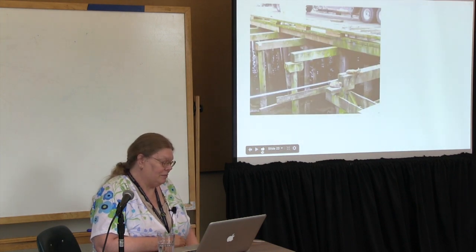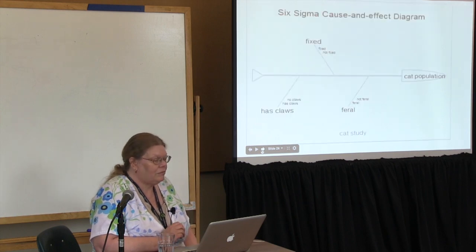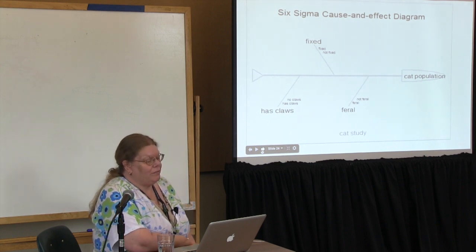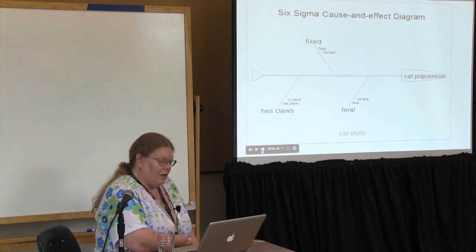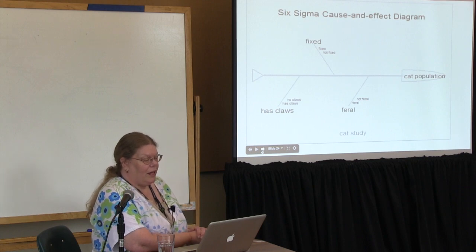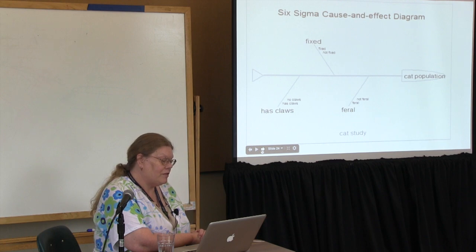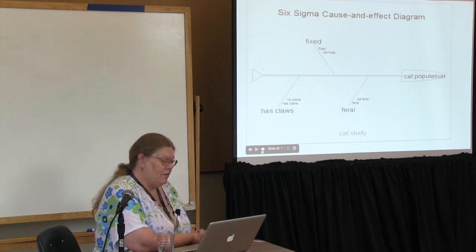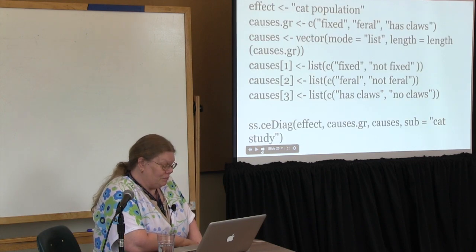Here are some outdoor cats. I think it's best to just study these cats by observing them — I don't think I'm going to be able to get them into my cohort study. This is called a cause-and-effect diagram, nicknamed the fish diagram in Six Sigma. The head of it is my goal of cat population. The lines coming off have the factors and the levels of the factors that affect my cat population: has claws, feral, and fixed.